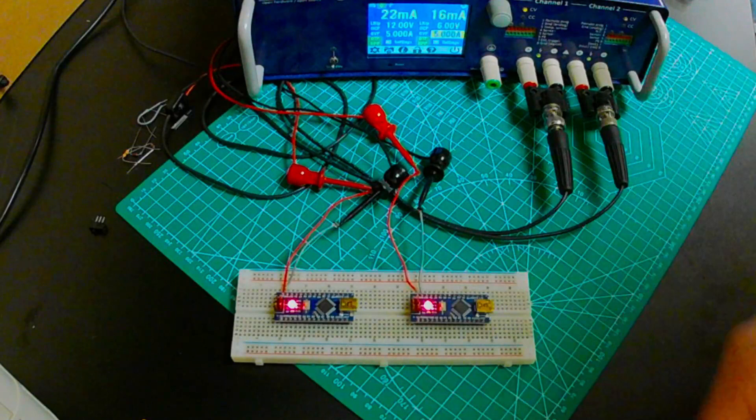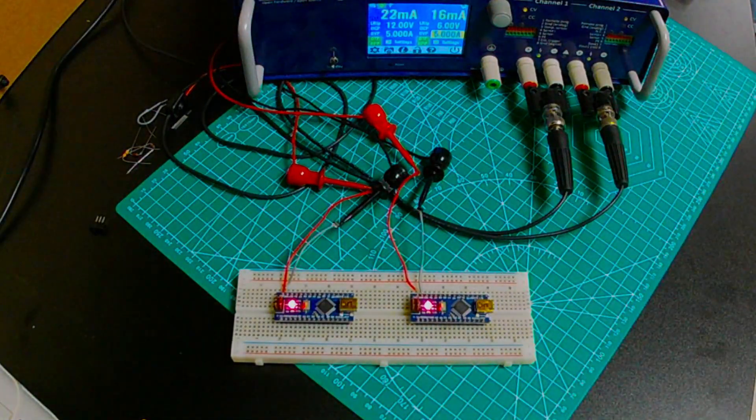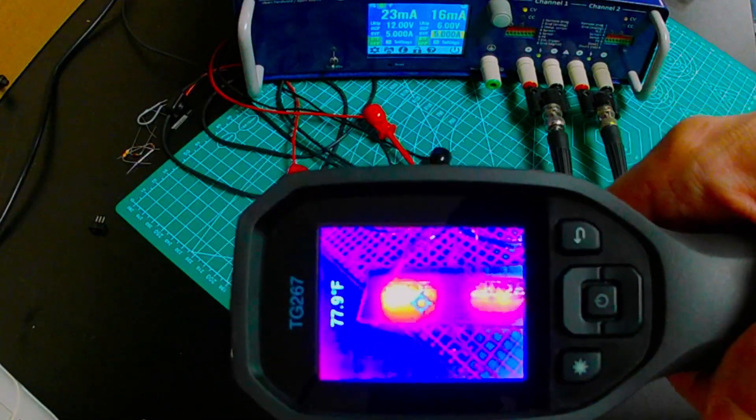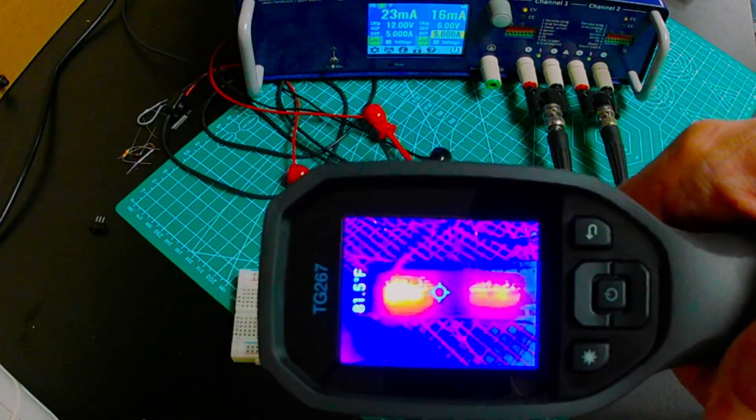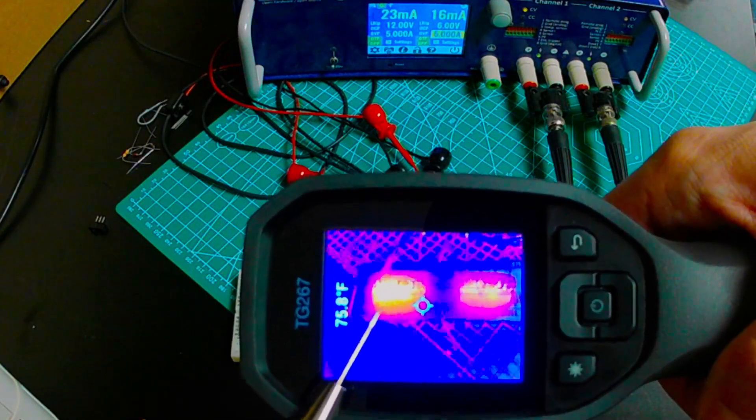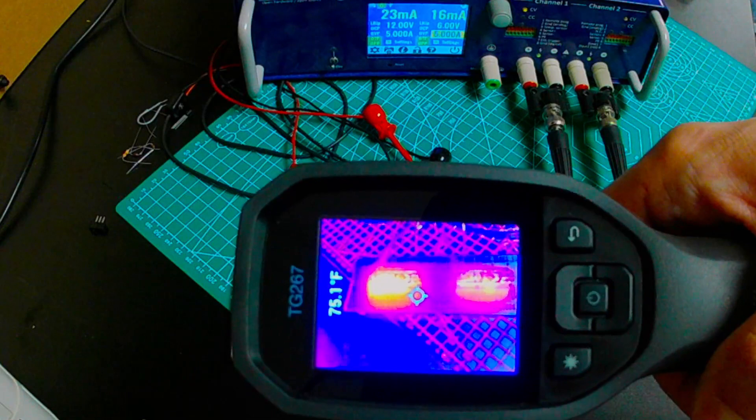And so before I talk more about this, I just want to give you a different way to look at that circuit, and that's through this thermal camera. With this thermal camera, we can actually see this one on the left has much more heat around it than this one on the right.